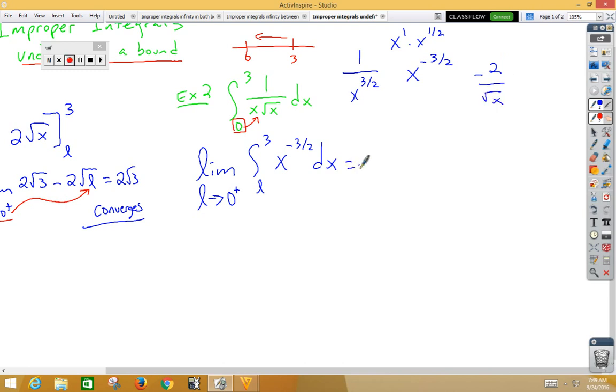So now we have the limit as L approaches 0 from the right side. We have negative 2 over root x from L to 3. Well, if we plug in, we get negative 2 over root 3 minus negative 2 over... Now, we have root and we are plugging in a 0.